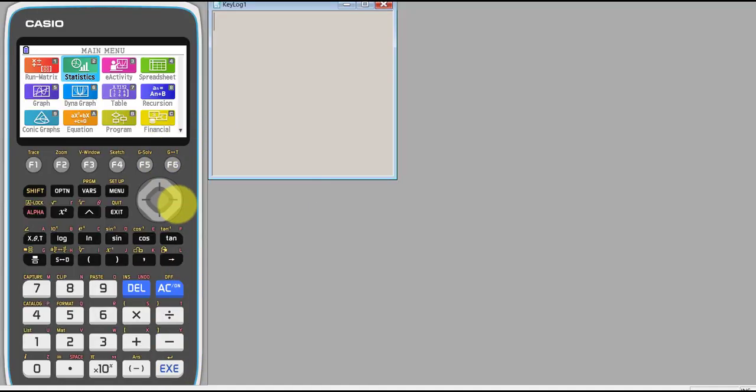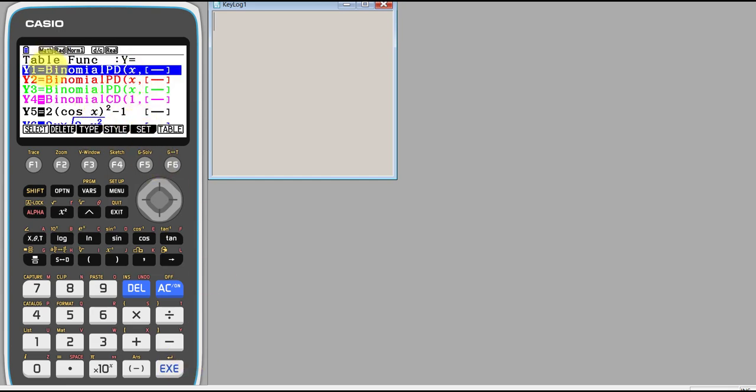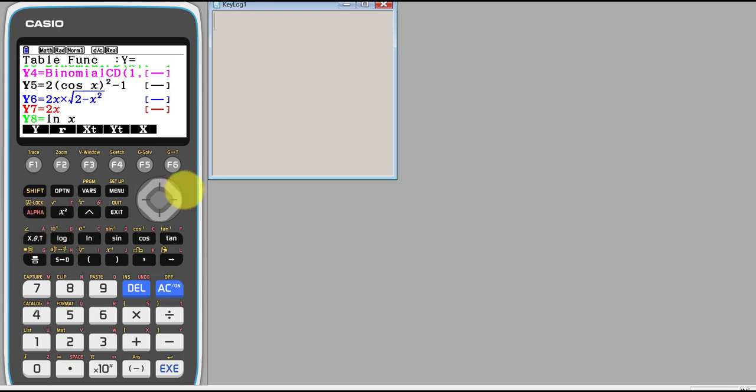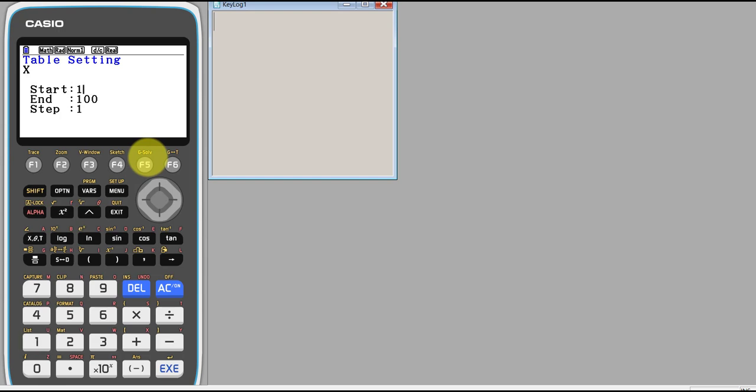So here's my calculator. If I go across to the table function, I'd like to know, and I've got lots there so I'll just make sure they're deselected. I've been doing some binomial probabilities. In here I just get my natural log of x, and then I set my table up by saying set, I want it to start at 1, I want it to finish at 2, I want it to go up in 0.25s, and then I look at my table.